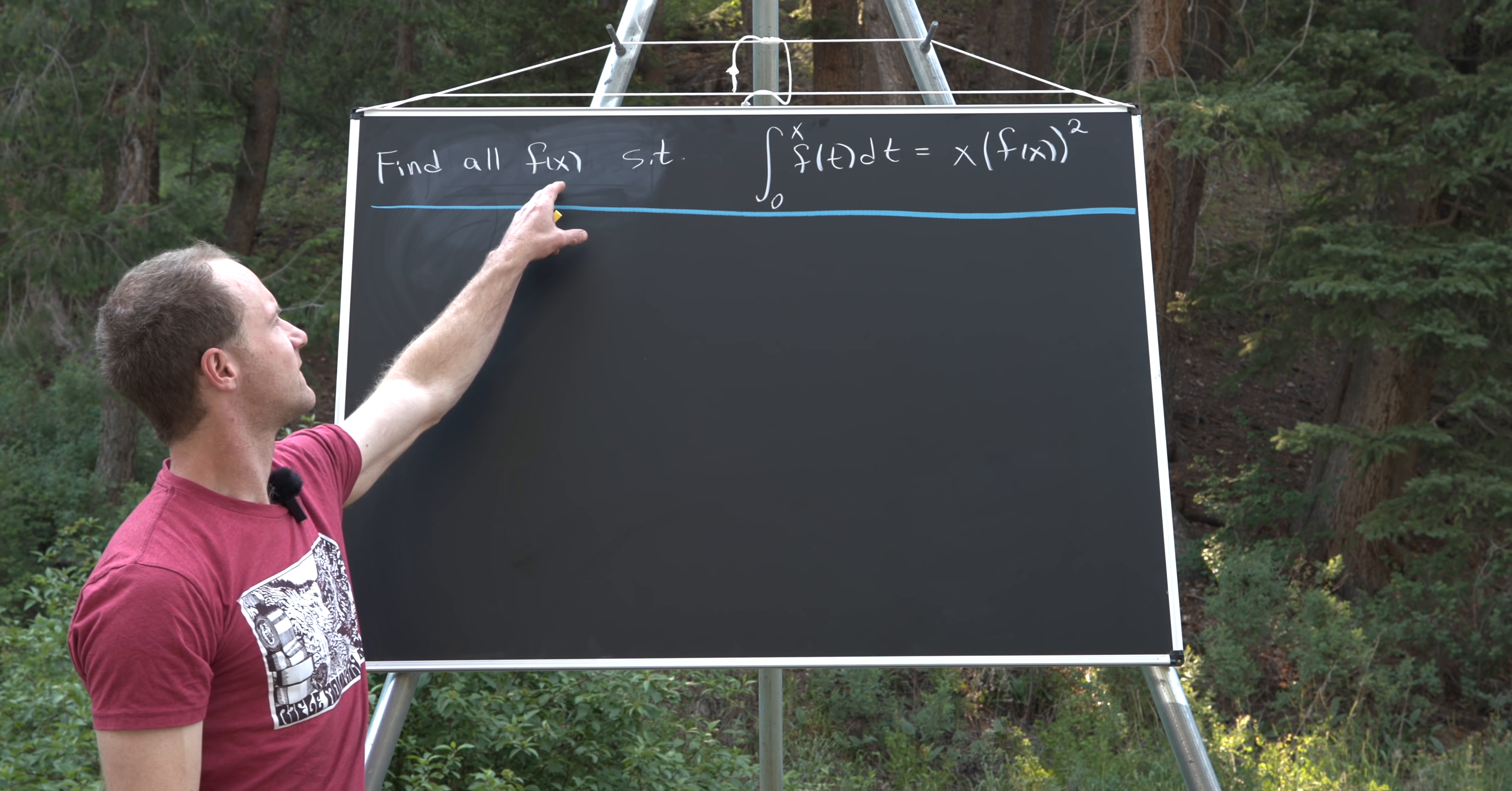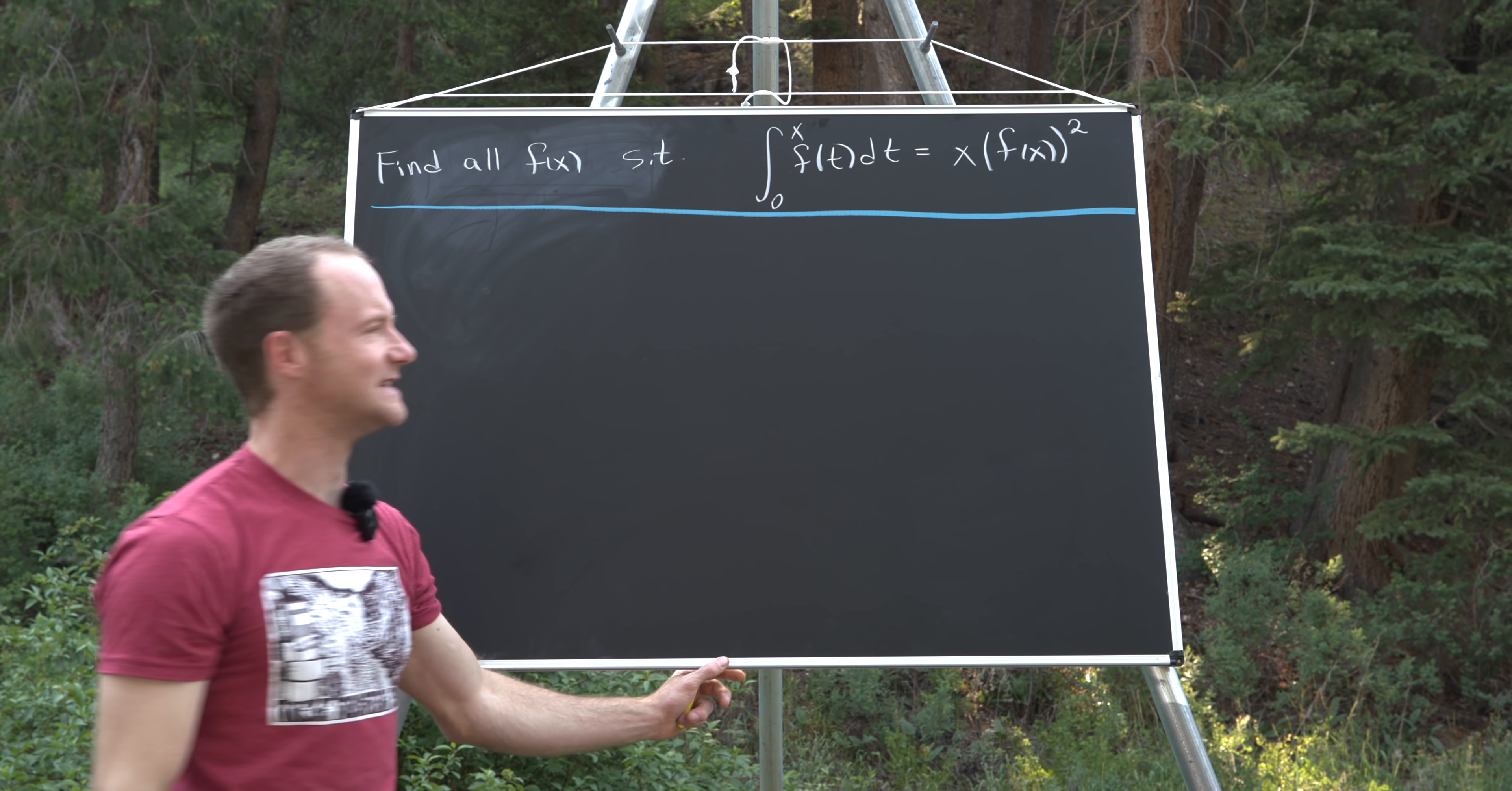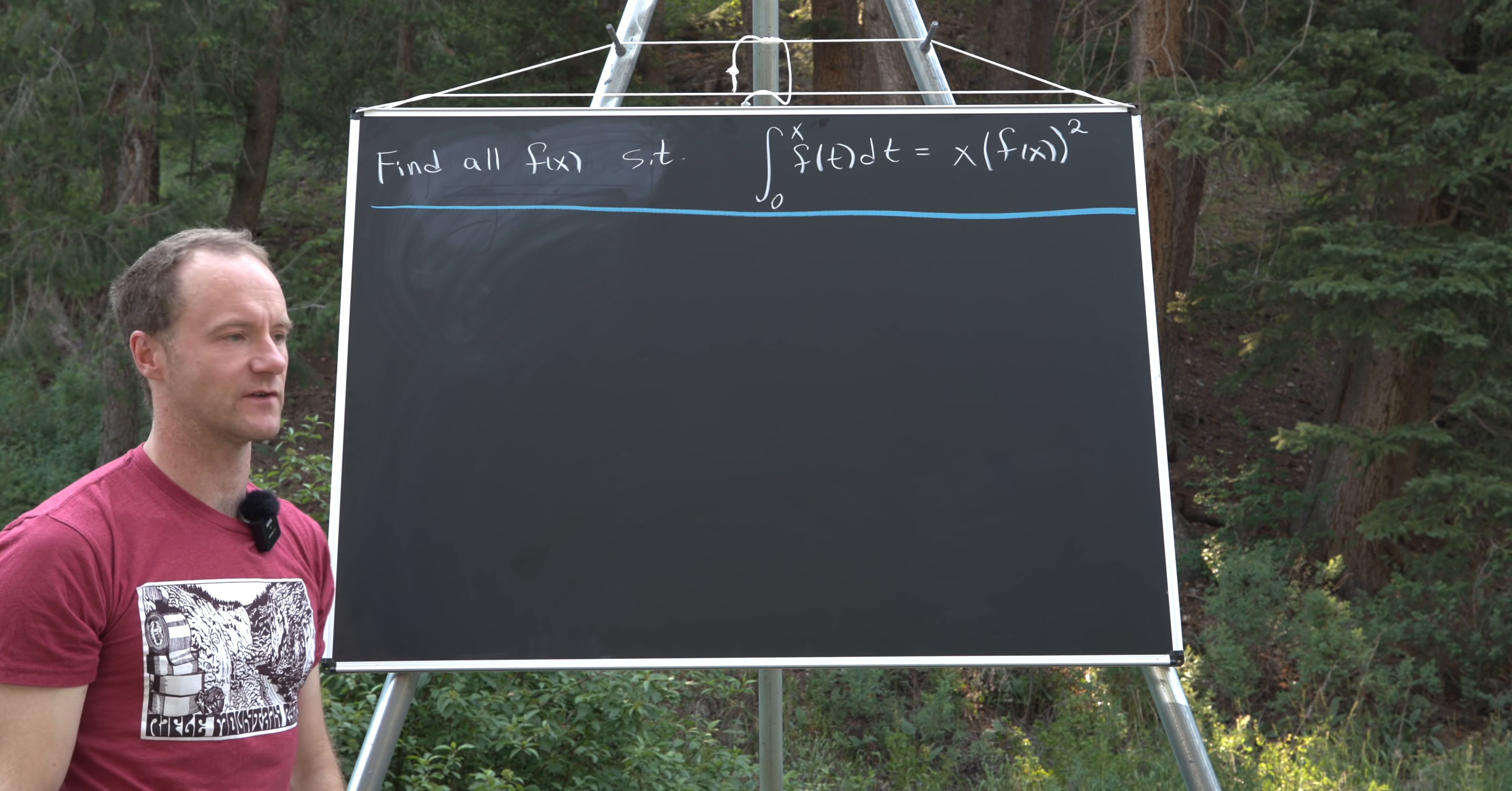We want to find all functions f of x such that the integral from 0 to x of f of t dt is equal to x times f of x squared, where we're squaring that function.